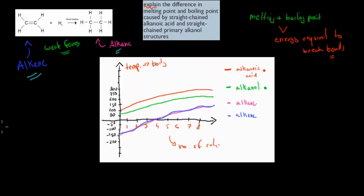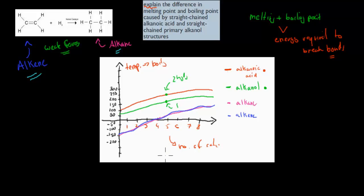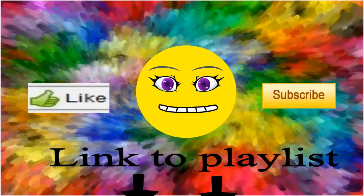The graph shows this clearly. For five carbons, you can see the alkenoic acid boiling point is higher, and the alkanol is slightly lower — because alkenoic acids form two hydrogen bonds and alkanols only form one. Alkanes and alkenes form none, so their boiling points and melting points are the lowest. I hope that was useful — thank you for watching.